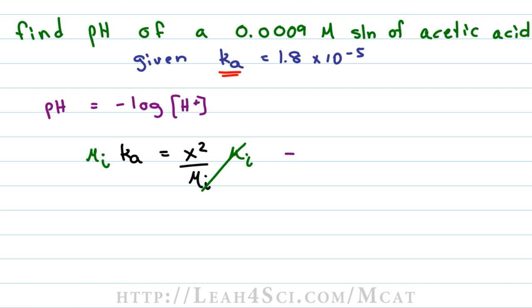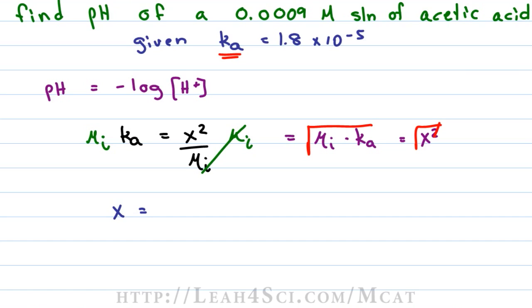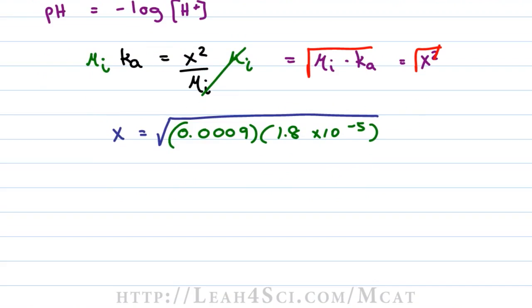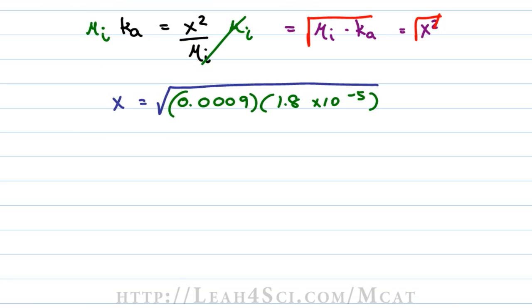Multiply both sides by molarity initial, which gives me that molarity initial times Ka equals X² and then take the square root of both sides. Now let's solve for X. So we know that X equals the square root of the molarity initial times the Ka where the molarity initial is 0.0009 and the Ka is 1.8 × 10^-5 which is great but how do you solve this without a calculator? So we'll have to use some of the math tricks which I teach in my math series. The first one we want to do is to simplify this. I'm going to round this 9 to a 10 which gives me 0.001 and I'll round the 1.8 up to a 2.